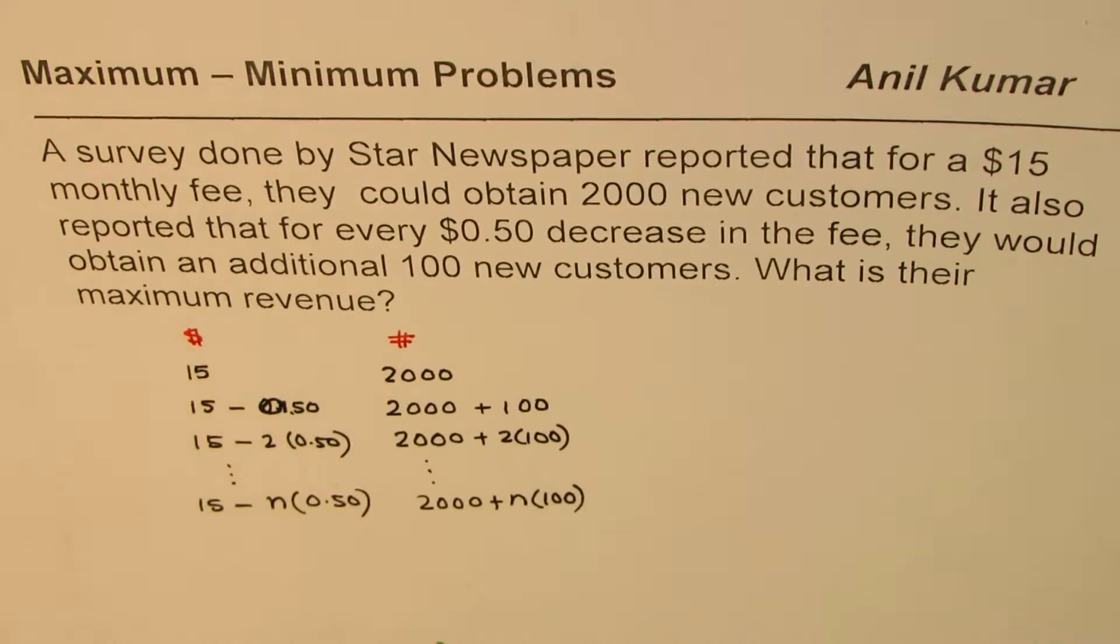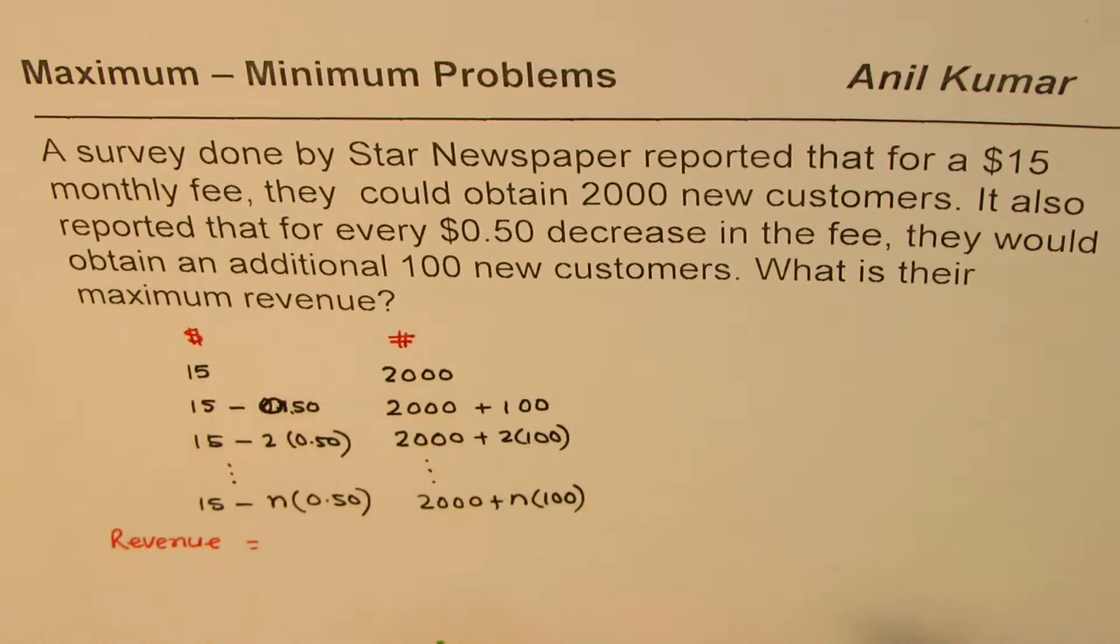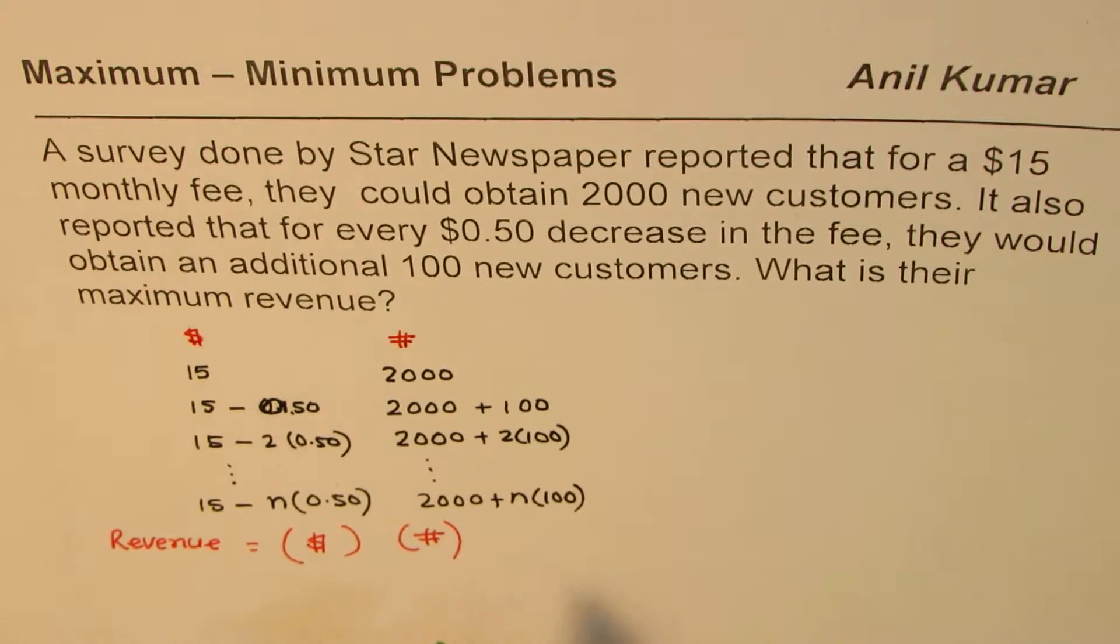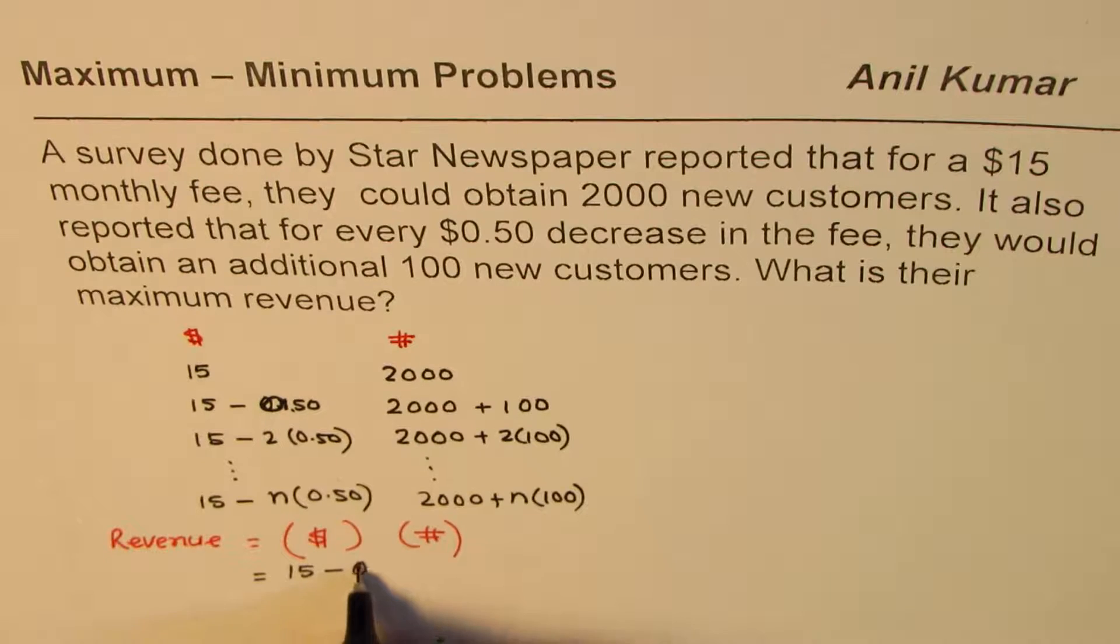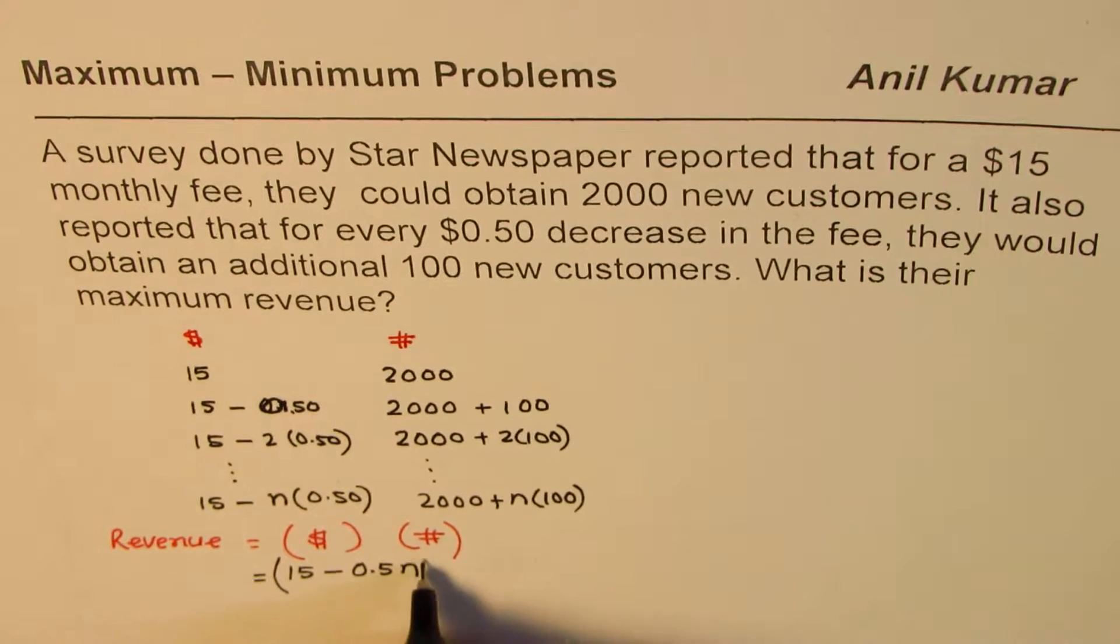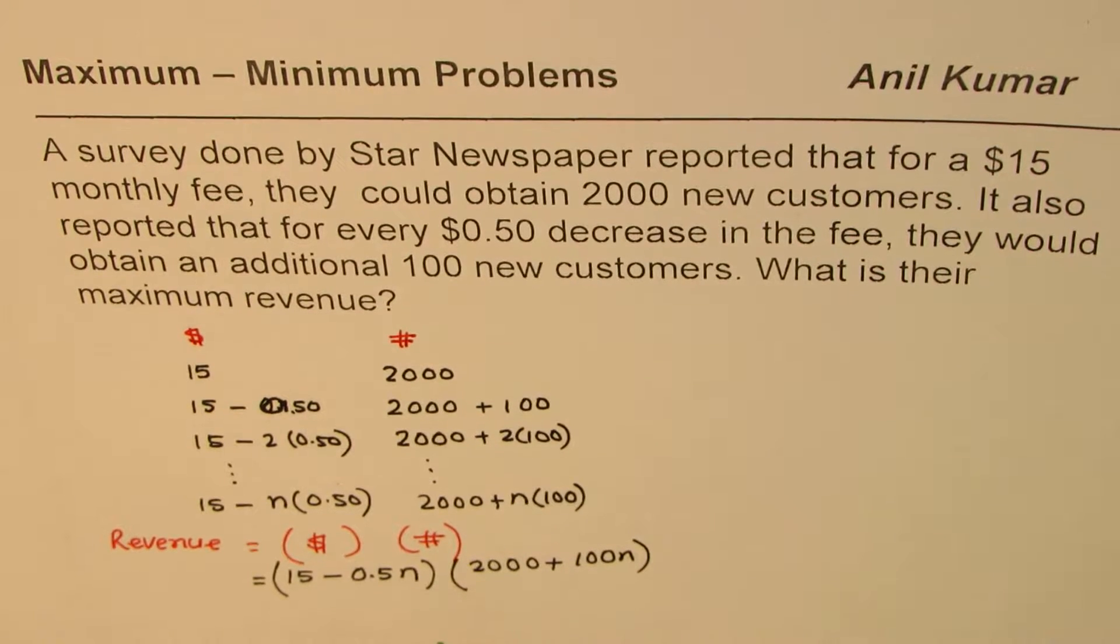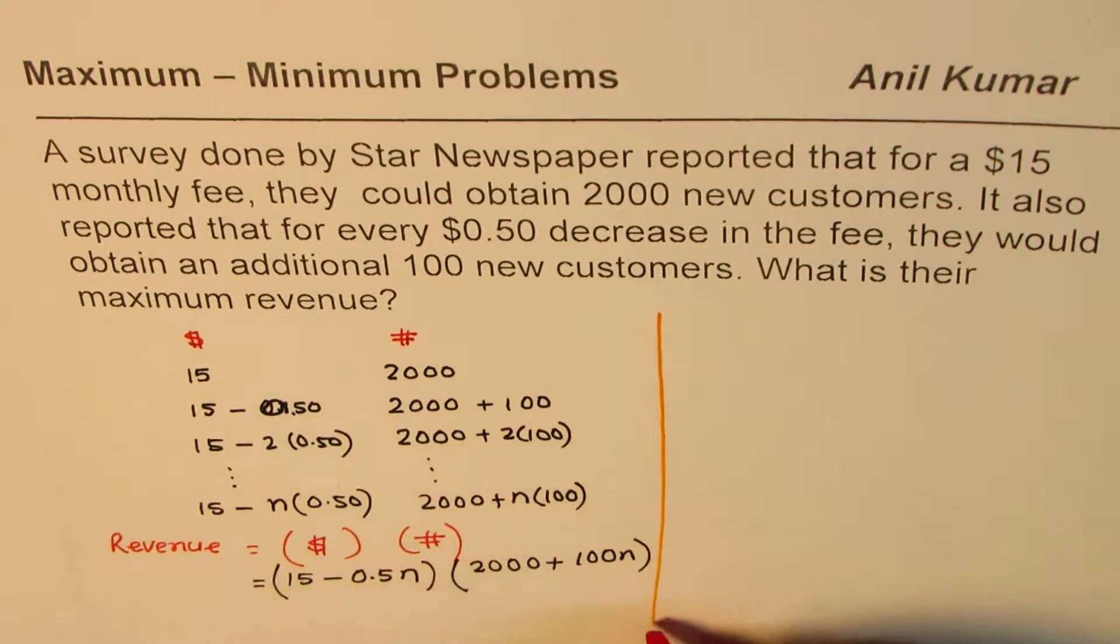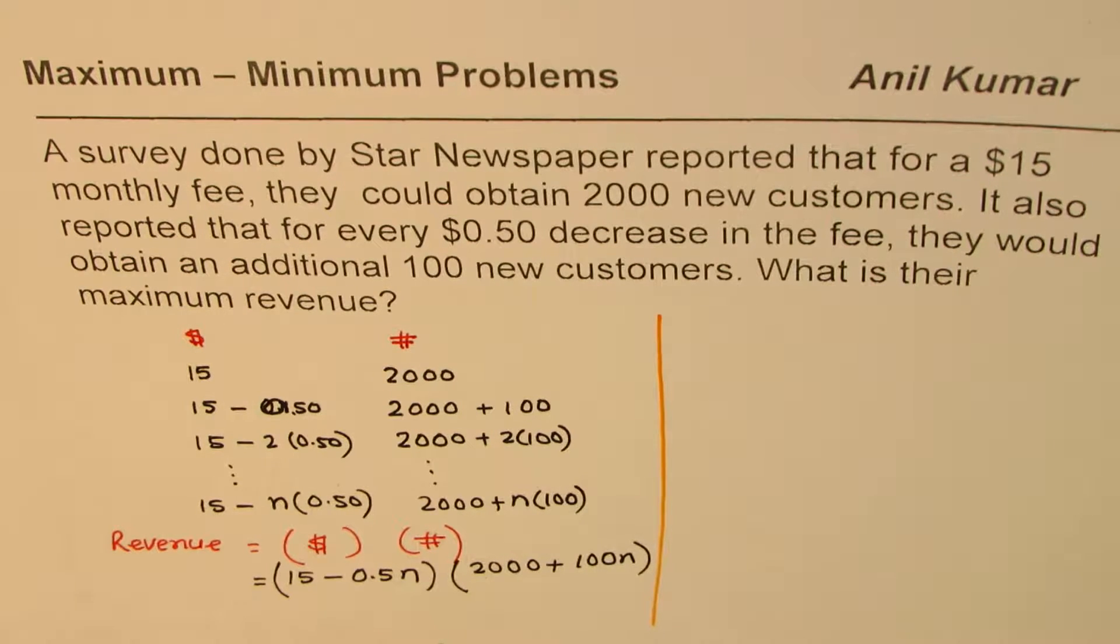Now it says, what is their maximum revenue? Now what is revenue? So when you say revenue, revenue is the dollar amount times number of persons who are paying monthly fee. That's the returns you get. So it is all the dollars multiplied by all the numbers, product of these two. So in our case, for a general situation, revenue will be 15 minus 0.5n times 2,000 plus 100n. Why did I write it like this? Mainly because whenever you're writing a polynomial or anything linear also, it's good to write the numbers before the variable. So that is the revenue.